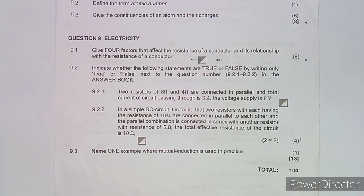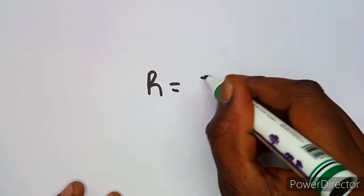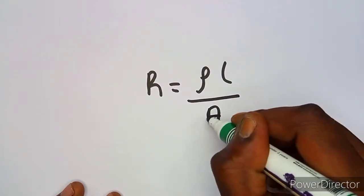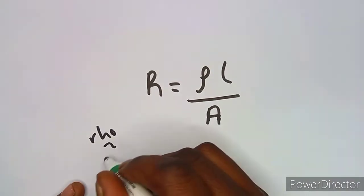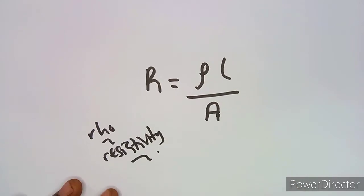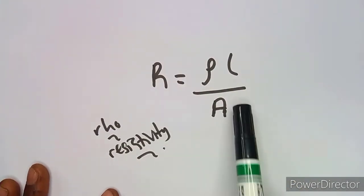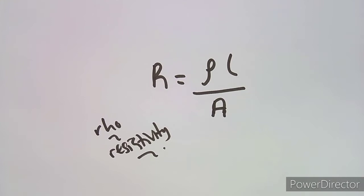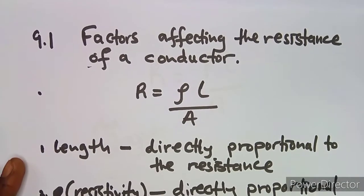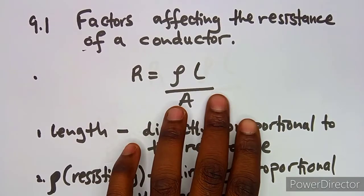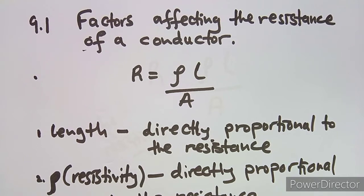In order to know these factors, we take them from the formula for resistance, where resistance R is equal to ρL over A — where ρ is resistivity, L is length, and A is cross-sectional area. These are the effectors as you can see from the formula.